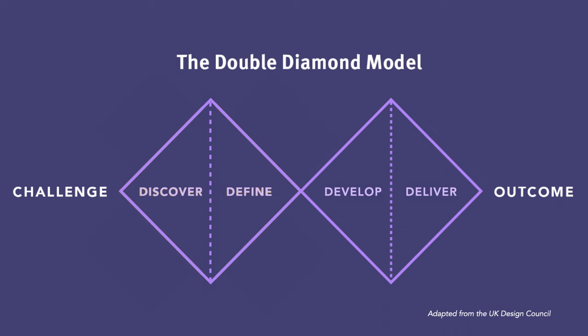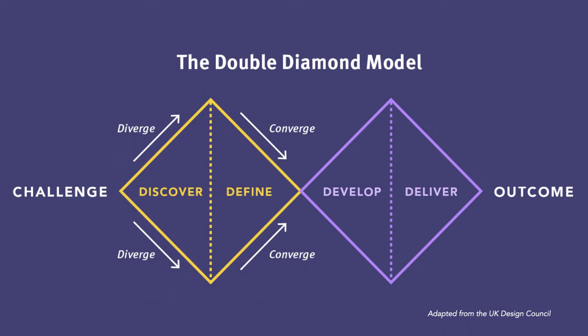The problem space and solution space refer to two distinct phases in UX research and design. When describing these two phases, I like to refer to the double diamond model created by the UK's Design Council as a helpful visual aid. The problem space can be represented by the first diamond, which includes the discover and define stages.